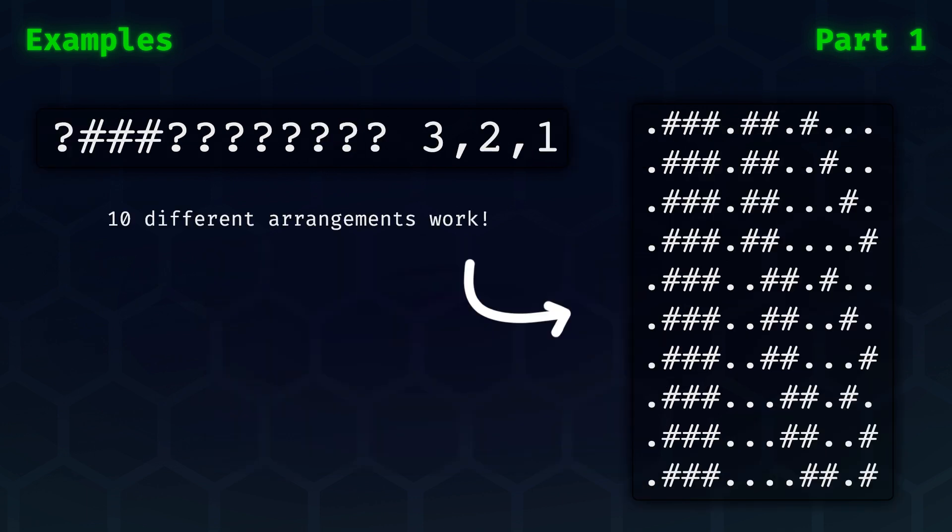Lastly, here is an example with ten different possible arrangements. Please pause the video to convince yourself that this is indeed the correct number, and that you understand why these arrangements are possible. To solve this problem on your own, now is a good moment to go get your own puzzle input from adventofcode.com.